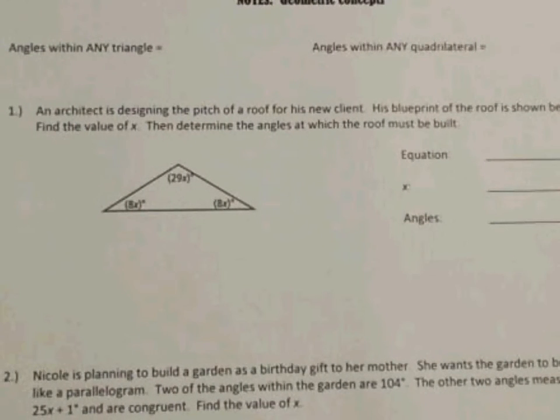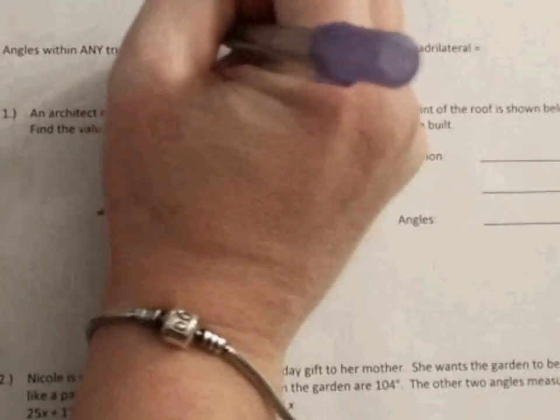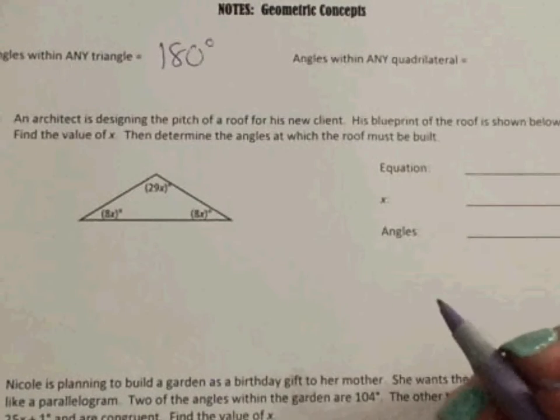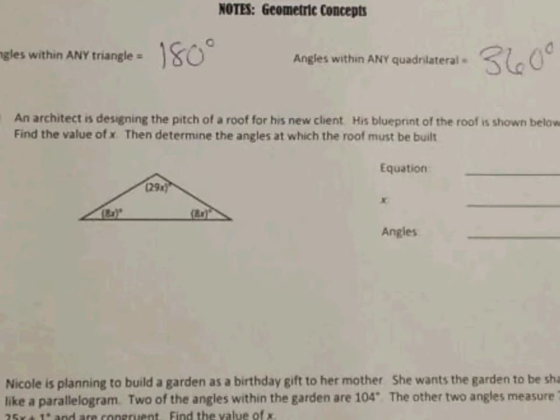We know that the angles within any triangle always add up to be 180 degrees, and any quadrilateral, which is a four-sided shape, always add up to be 360 degrees. So you need to know that because that is important whenever we build our equations.